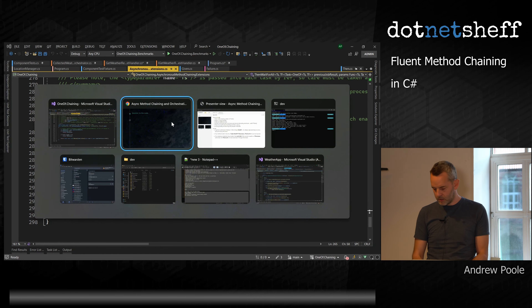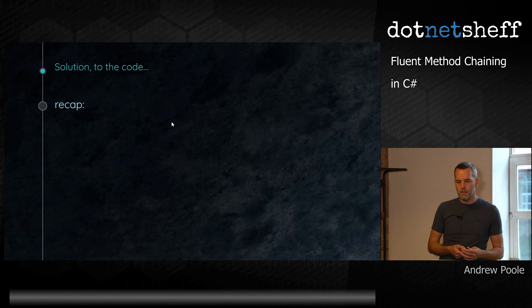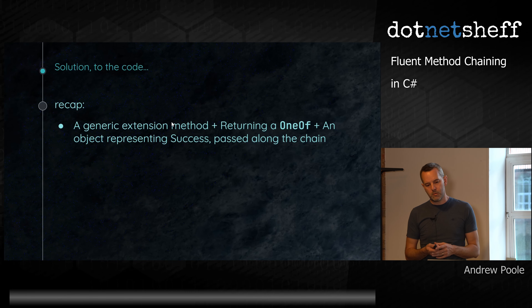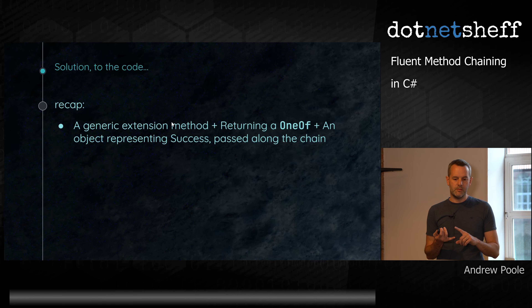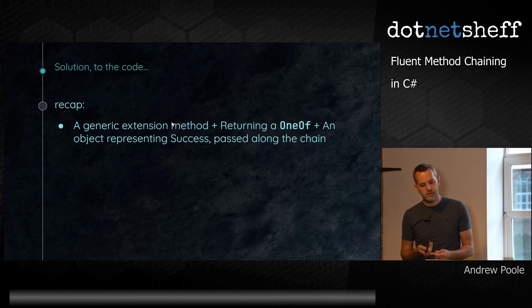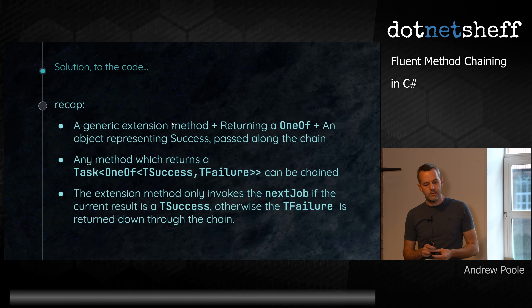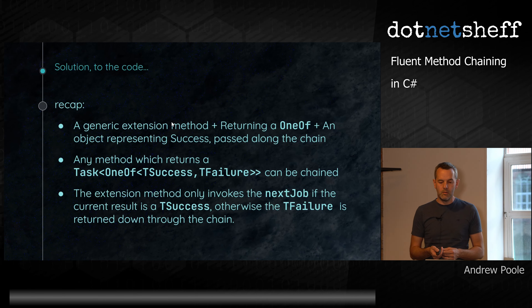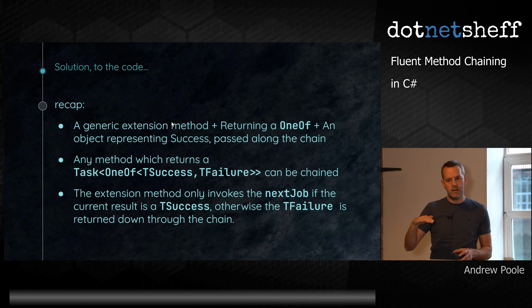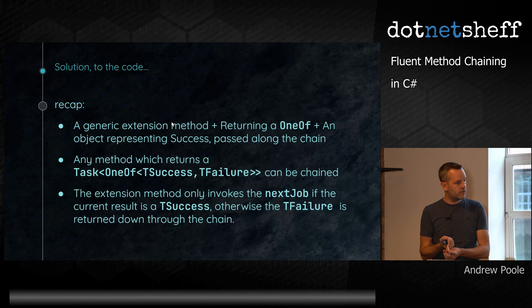So that was the solution. To recap: the answer we found was the combination of a generic extension method, the returning of a OneOf, and an object which represents success that's passed down through the chain. Any method which returns Task of OneOf T success or T failure can then be chained, no matter where it comes from. The key thing is that the extension method only invokes the next job if the current result is a T success. Otherwise, if there's been a failure at any point, that failure gets passed all the way down — that's what enables the single return keyword.